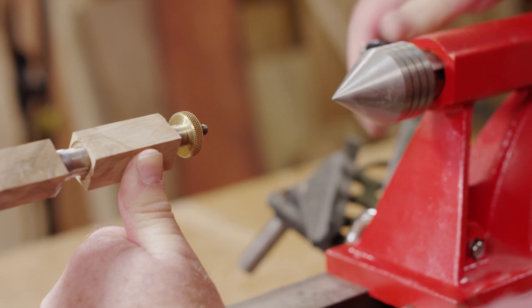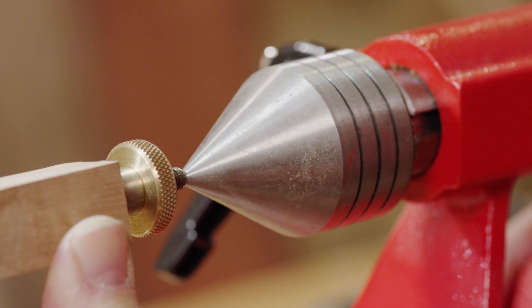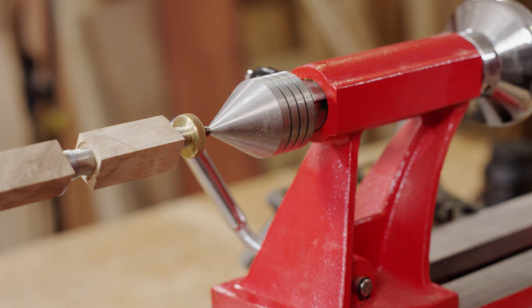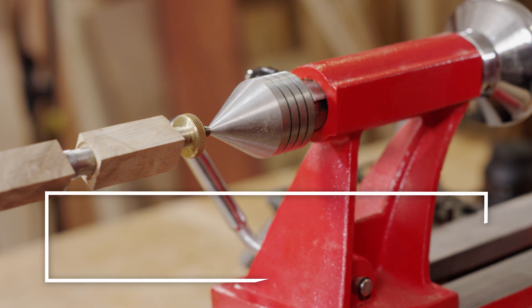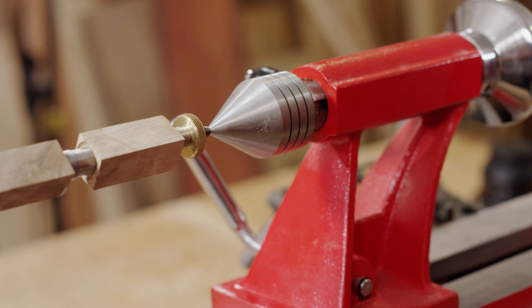Slide the tailstock with the live tailstock center up to the mandrel until the center just comes in contact with the inside of the dimpled or cupped end of the mandrel shaft. Do not over tighten the tailstock or you will bow the mandrel resulting in an oval off-center pen. If you over tighten the tailstock, the mandrel may bend and need to be replaced.